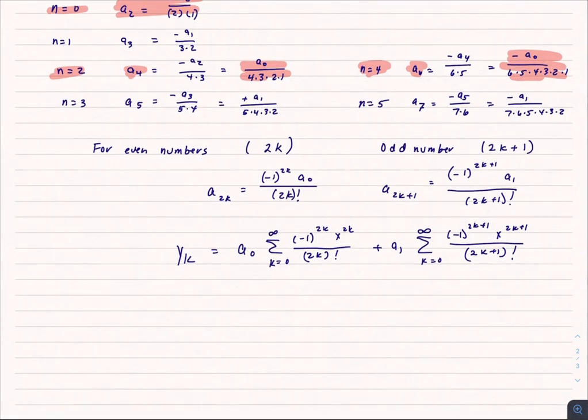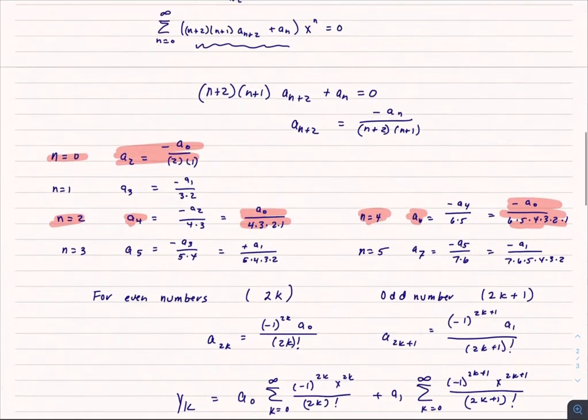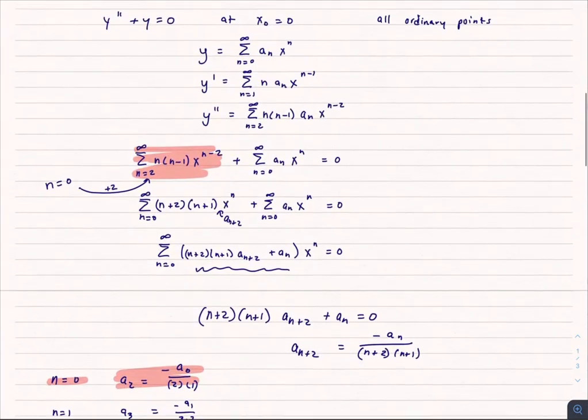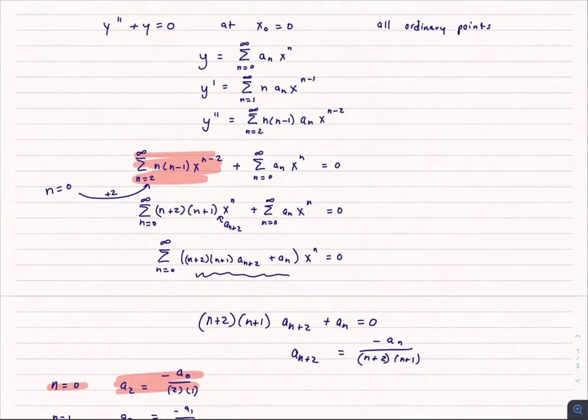The a_1 and the a_0, we would find that using the initial conditions. Now you might say, my goodness, I knew how to solve that in a much easier way.